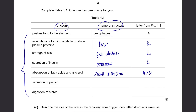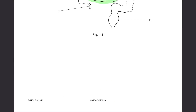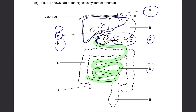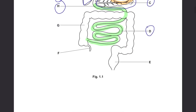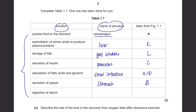Secretion of pepsin — it's secreted by the stomach, and the letter for stomach is B. Digestion of starch also occurs in the small intestine, so again you write either H or D.